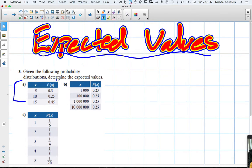Expected value. We're going to look at A here. Given the following probability distributions, determine the expected value.